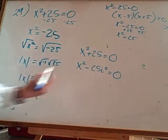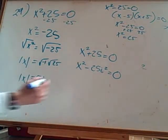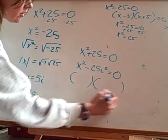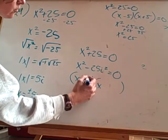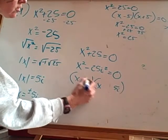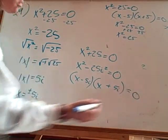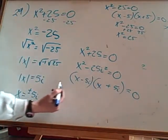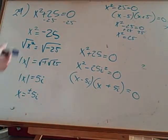So I can write it as (x - 5i)(x + 5i) = 0. Using zero product property, I get the same thing: x = 5i or x = -5i.